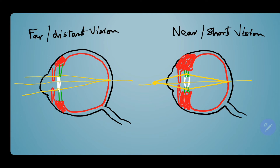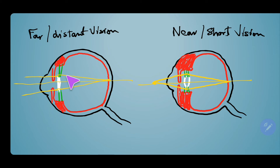Three factors are involved in accommodation: one is the ciliary muscle, the second is these zonules or lenticular fibers, and the third is the lens itself. In the relaxed position, the eye lens is flattened because these zonules are actually stretched — they stretch the lens while the ciliary muscle is relaxed.